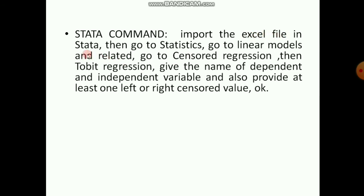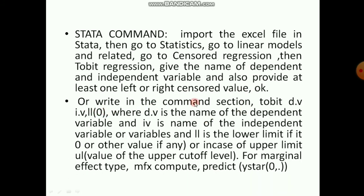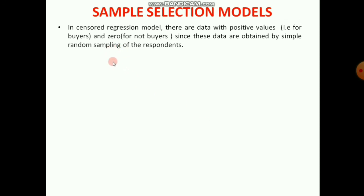In Stata: import the Excel file, go to Statistics > Linear Models and Related > Censored Regression > Tobit Regression, give the dependent and independent variable names, and provide at least one censored value (left or right or both), then click OK. Alternatively, in the command section write: tobit [dependent variable] [independent variables], ll(0) for lower limit zero, or ul([value]) for upper limit. For marginal effects, type: mfx compute, predict(ystar(0,.)).